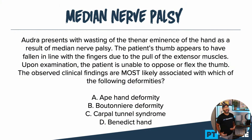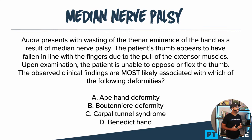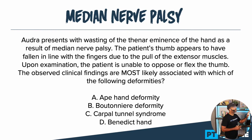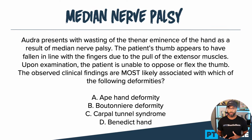All right y'all, let's go ahead and pop it right back in. We have a question about median nerve palsy. It says: Audra presents with wasting of the thenar eminence of the hand as a result of median nerve palsy. The patient's thumb appears to have fallen in line with the fingers due to the pull of the extensor muscles. Upon examination, the patient is unable to oppose or flex the thumb. The observed clinical findings are most likely associated with which of the following deformities? A: ape hand deformity, B: boutonniere deformity, C: carpal tunnel syndrome, D: benediction hand.